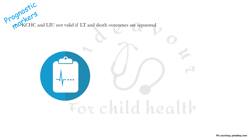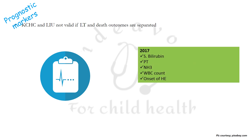The King's College Hospital criteria and liver injury units are not valid when liver transplantation and death outcomes are separated from each other. This is in contrast to the 2017 guidelines, where other predictors of outcome were specially specified, including serum bilirubin, prothrombin time, ammonia, WBC count, and onset of hepatic encephalopathy.